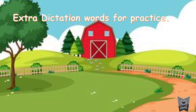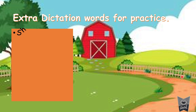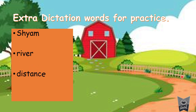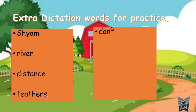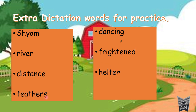There are some extra words for practice we are going to learn. Shyam — S-H-Y-A-M. River — R-I-V-E-R. Distance — D-I-S-T-A-N-C-E. Feathers — F-E-A-T-H-E-R-S. Dancing — D-A-N-C-I-N-G. Frightened — F-R-I-G-H-T-E-N-E-D. Helter — H-E-L-T-E-R. Skelter — S-K-E-L-T-E-R.